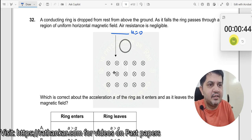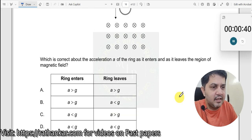It falls down like this. Air resistance is negligible. Which is correct about the acceleration of the ring as it enters and as it leaves the region of the magnetic field?